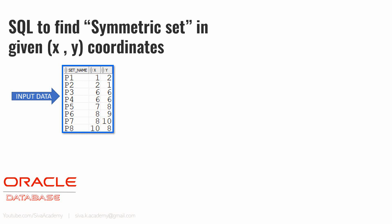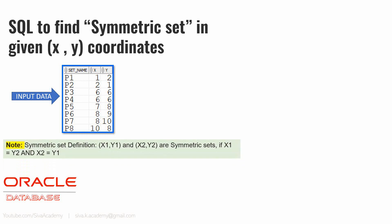The question is: we are provided with a table which contains XY coordinates of certain points. The expectation is we need to write a SQL query to find out the symmetric set. Two points are said to be symmetric if X of P1 is equal to Y of P2, and X of P2 is equal to Y of P1.